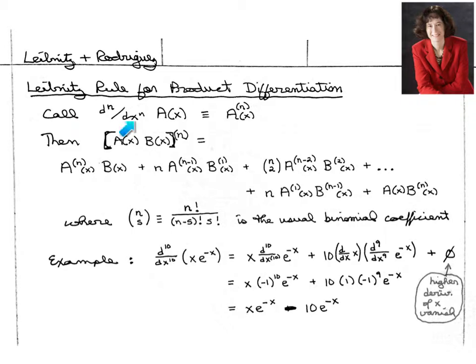we'll abbreviate that by writing a with the number of derivatives we're taking as a superscript in parentheses.